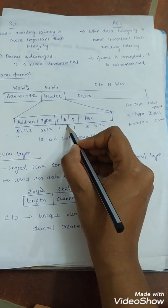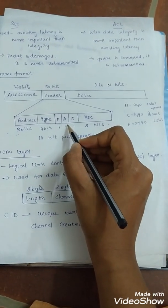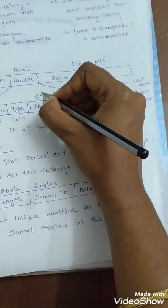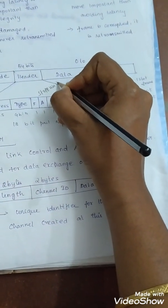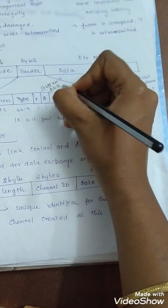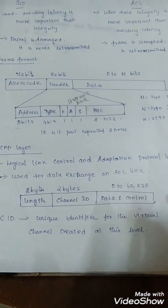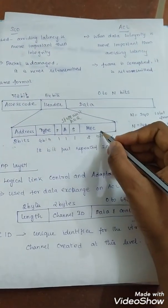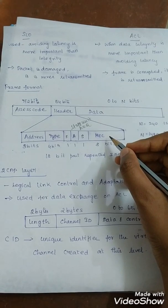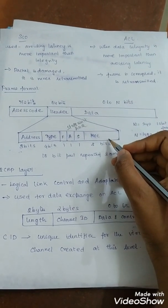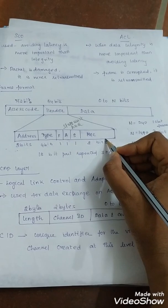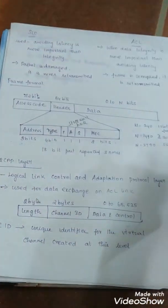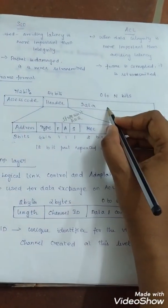Then A is the acknowledgement. Bluetooth uses stop and wait automatic repeat request method. Next one: S is the sequence number. HEC is the header error correction: an 8-bit subfield used to detect errors in each header section.